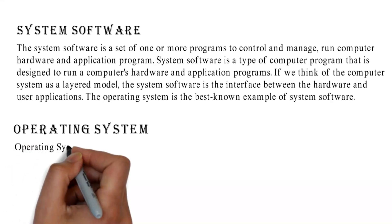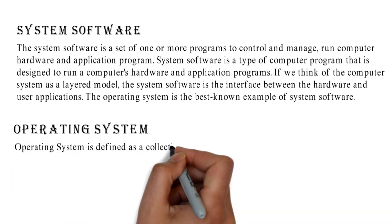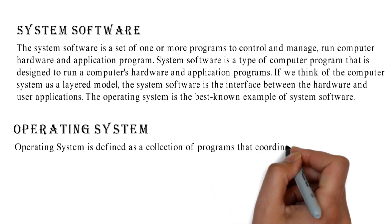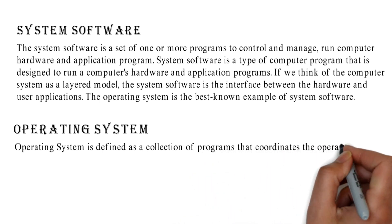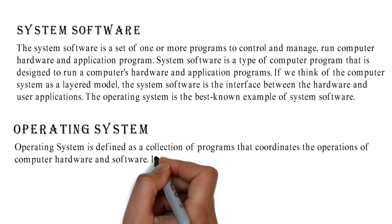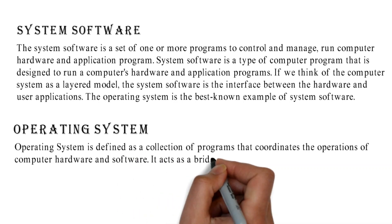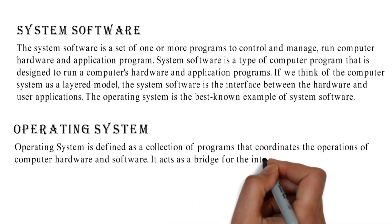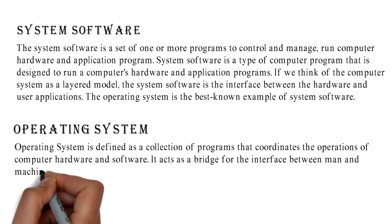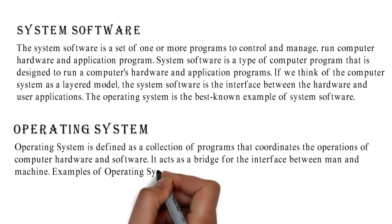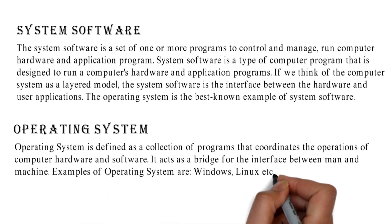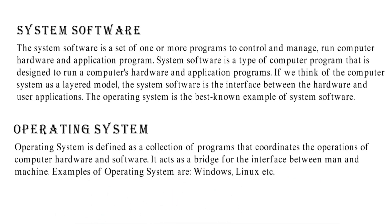An operating system is defined as a collection of programs that coordinates the operations of computer hardware and software. It acts as a bridge — the interface between man and machine. Examples of operating systems are Windows, Linux, etc.